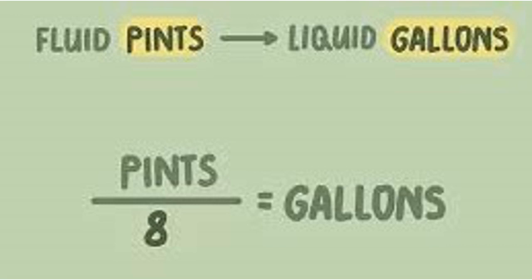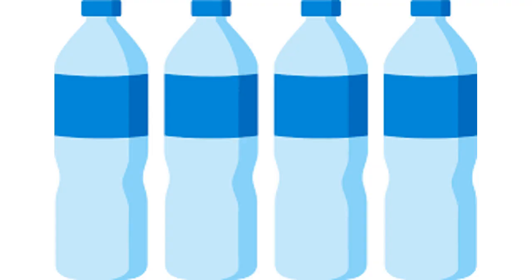Two different methods are used to measure gallons. The first is the volume, which uses the measurement of the fluid by volume. This method can be used to measure the amount of liquid in a bottle or the amount of liquid in a small container. The other method is the weight, which is a combination of these two measurements and then divided by four.